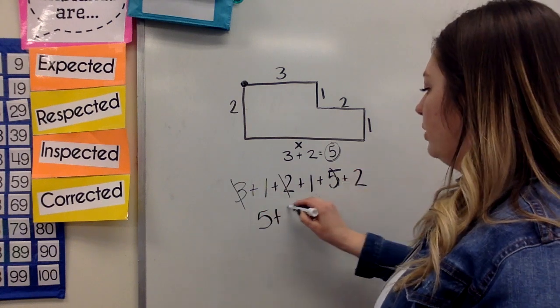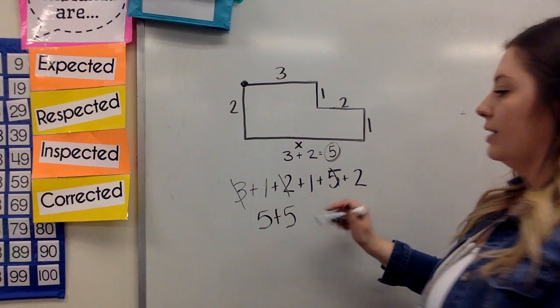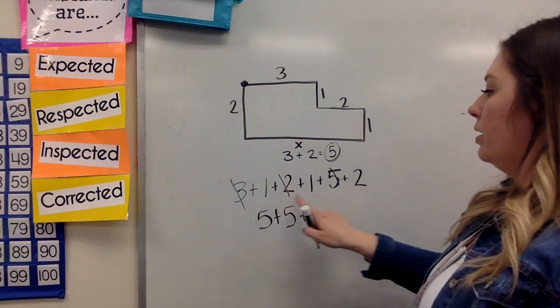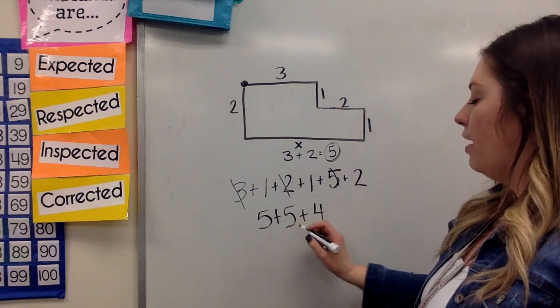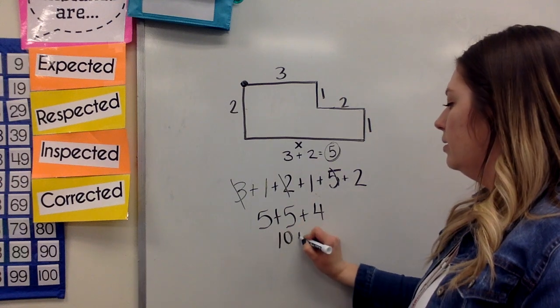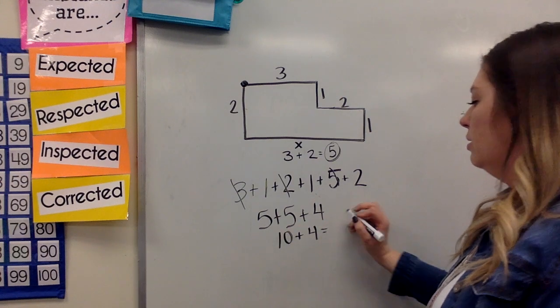I already have another five over here, so I'm just going to put those together so that I can add those easier. One, two, three, four. So five plus five is 10. 10 plus four is 14.